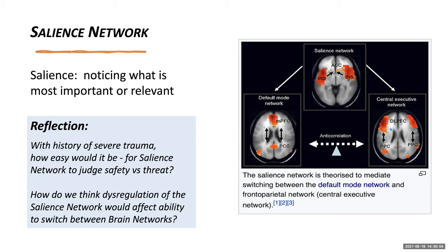Let's take a moment to reflect. With a history of severe trauma, how easy do we think it would be for the salience network to work — to be able to judge safety versus threat — and how do we think that dysregulation of the salience network would affect the ability to switch back and forth?